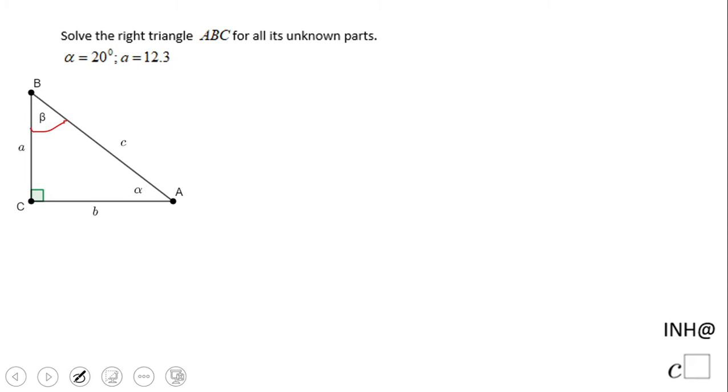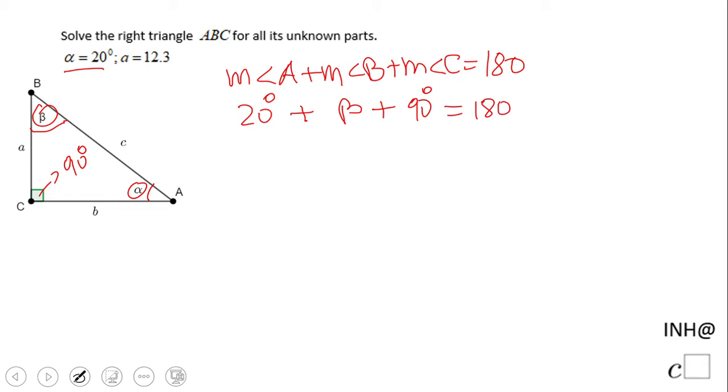We have a very important theorem in geometry: the measure of the interior angles of a triangle is 180 degrees. The measure of angle A (alpha) is 20 degrees, the measure of angle B (beta) we need to find, and the measure of angle C is 90 degrees. So beta will be 180 minus 110, which is 70 degrees.